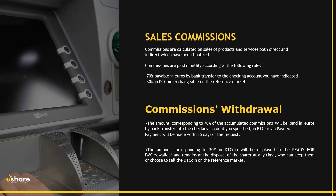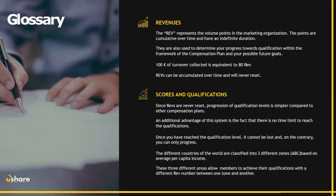It usually takes about five business days before you can get it after the request. Then you have the 30% remaining that are paid in DT coin, displayed in your FMC e-wallet in your back office, which you can either keep to see the value grow, or convert them into euros.